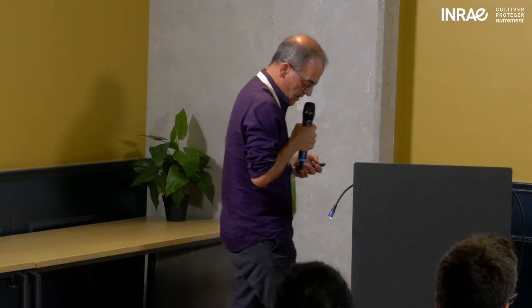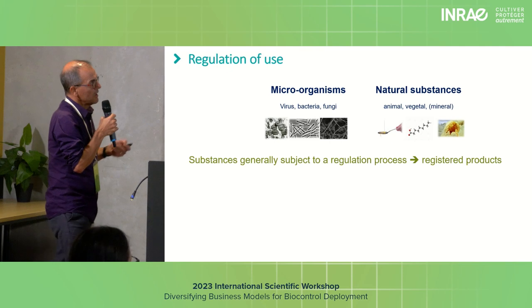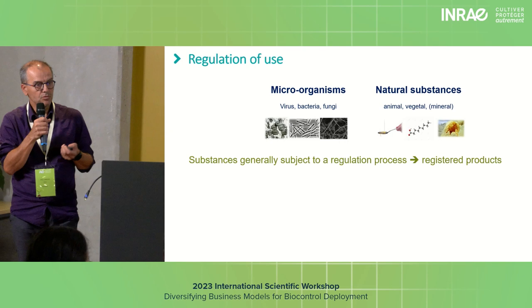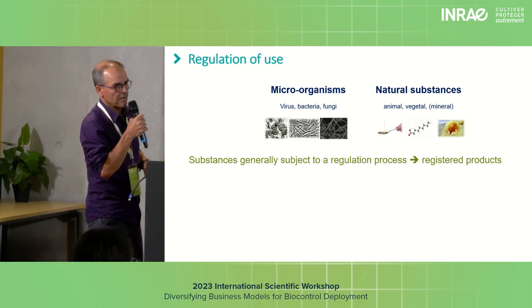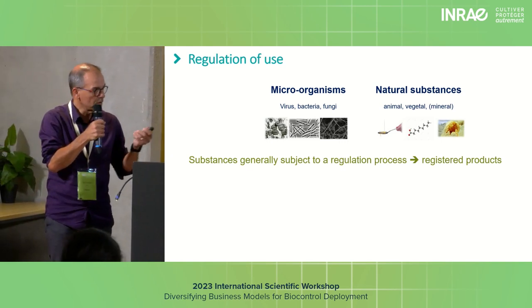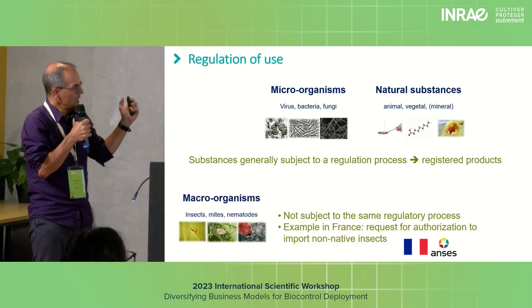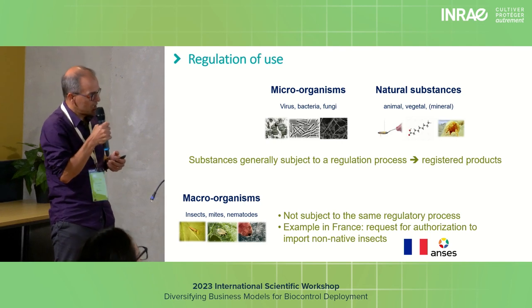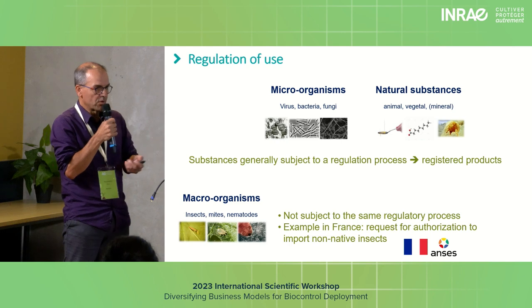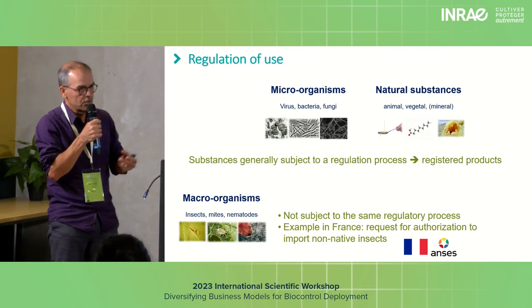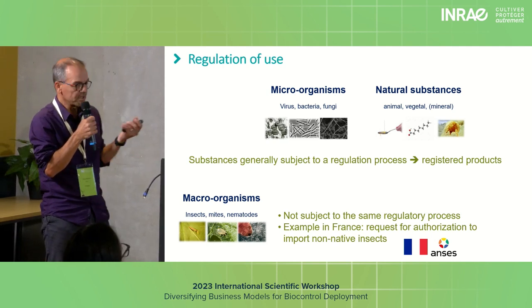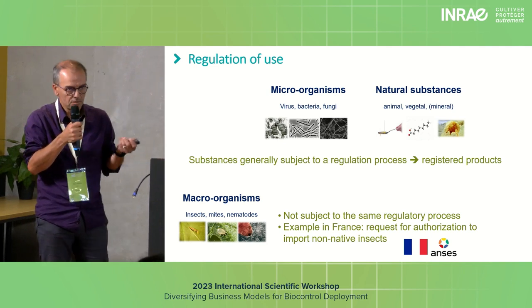Most of these augmentative biocontrol tools are submitted to regulation. Microorganisms and natural substances are subject to a regulation process, at least in Europe, the United States, and most countries, resulting in registered products that farmers can use. For macro-organisms it's a bit different — they are not subject to the same regulatory process. For example, in France, if you want to import non-native insects from outside the country, you have to request authorization from ANSES. But if you want to use native organisms, you can use them without any request.